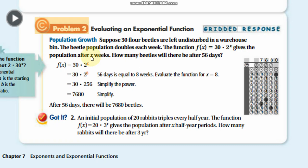The function gives the population after x weeks. We need to find how many beetles there are after 56 days. Converting: 56 days equals 8 weeks, so x equals 8. Inserting into the function: f(8) equals 30 times 2 to the power 8. Since 2 to the power 8 equals 256, we get 256 times 30 equals 7,680. After 56 days there will be 7,680 beetles.